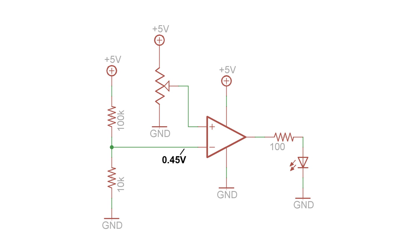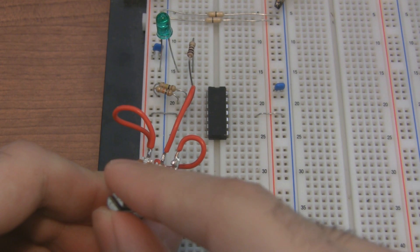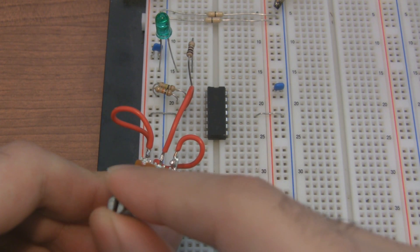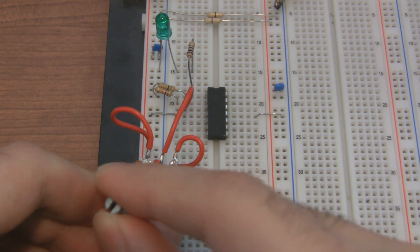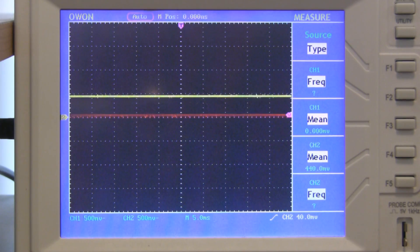And on the output of the op-amp, let's put a resistor and an LED. As I vary the voltage at V-plus, it goes higher and lower than 0.45 volts. This toggles the comparator's output high and low, which turns the LED on and off. On the oscilloscope, the yellow line is the constant 0.45 volt reference, and the red line is the voltage that I'm creating with my potentiometer. When the potentiometer voltage is greater than the reference voltage, the LED turns on and vice versa.